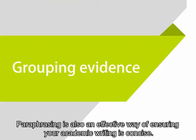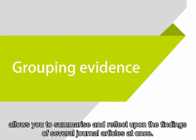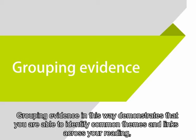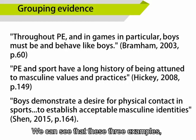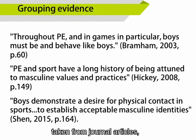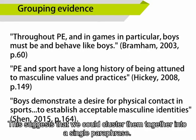Paraphrasing is also an effective way of ensuring your academic writing is concise. Grouping several sources together to create a cluster of references allows you to summarise and reflect upon the findings of several journal articles at once. Grouping evidence in this way demonstrates that you are able to identify common themes and links across your reading, and to synthesise these ideas in your own words. We can see that these three examples, taken from journal articles, share key similarities in terminology, which suggests that we could cluster them together into a single paraphrase.